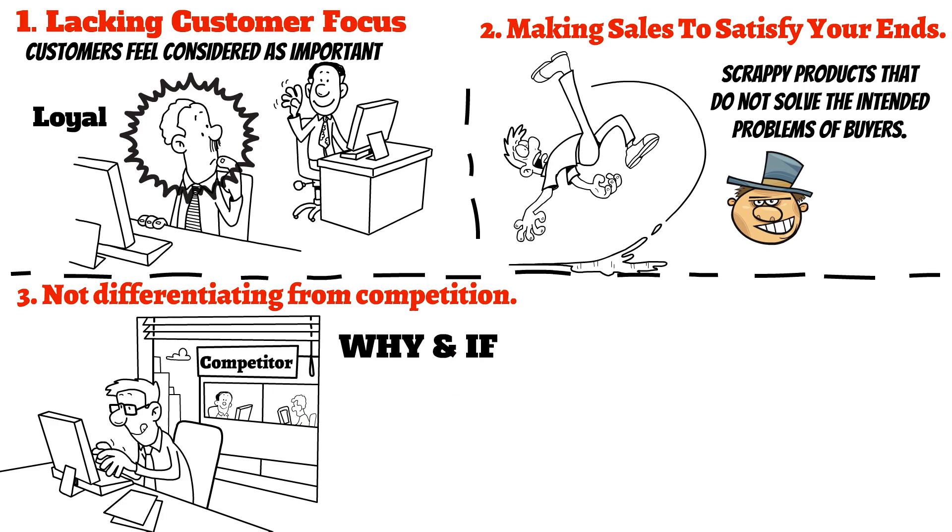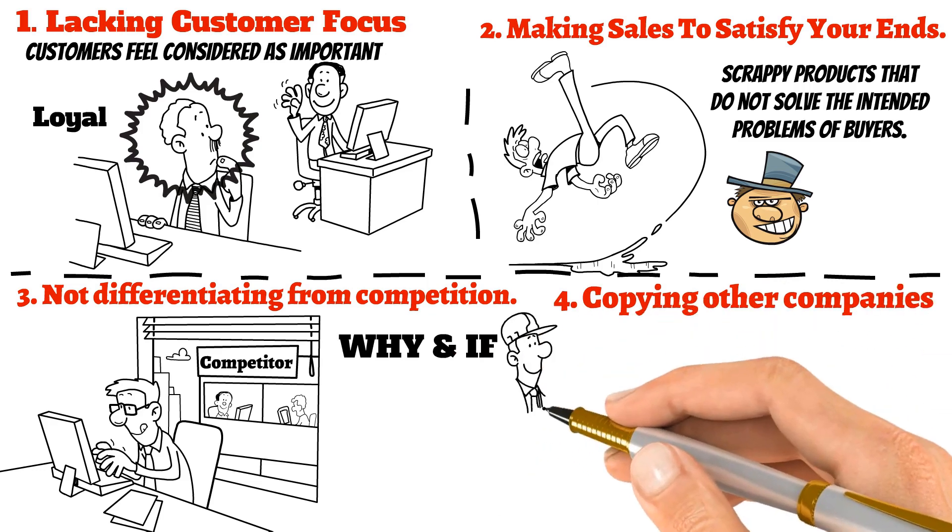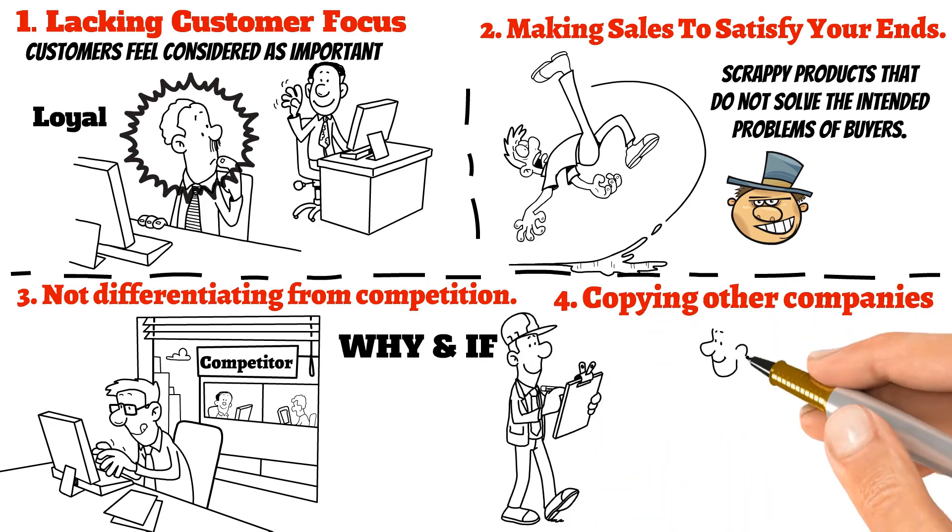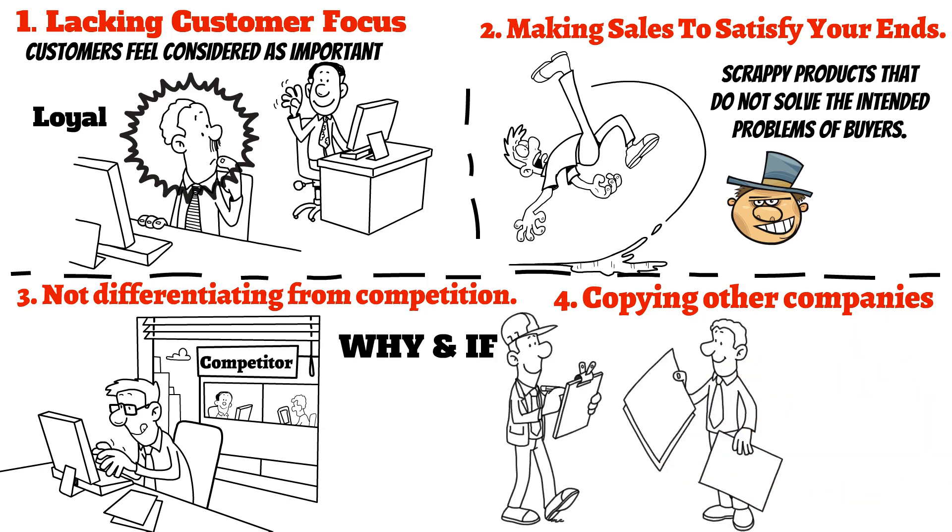Number four: copying other companies. The best way to get your small business noticed online or offline is to be unique. Copying a larger competitor's marketing strategy or website will do nothing for your business. You have to give potential customers reasons to choose you rather than anyone else.